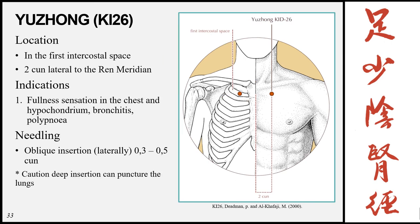Yuzhong, Kidney 26, is located in the 1st intercostal space, 2 cun lateral to the Ren meridian. Indications: fullness sensation in the chest and hypochondrium, bronchitis, and polypnea. Needling: oblique insertion laterally 0.3 to 0.5 cun, with the same caution against deep insertion as this can puncture the lungs.